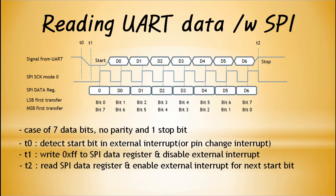If the SPI is reading the signal sent from the UART and is set to master mode, it should be set to LSB first, since the UART supports LSB first communication. If the SPI supports only MSB first, the data must be bit-reversed before transmitting, and the received data must also be bit-reversed.